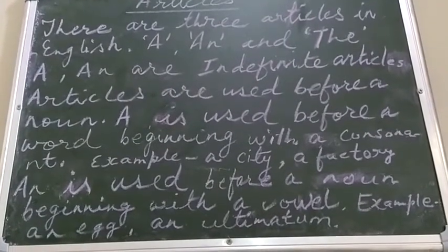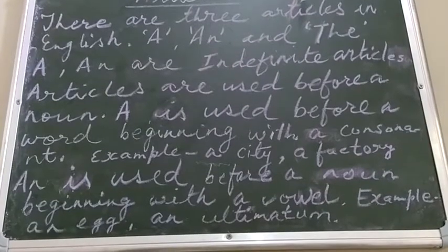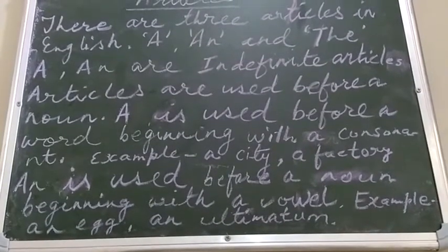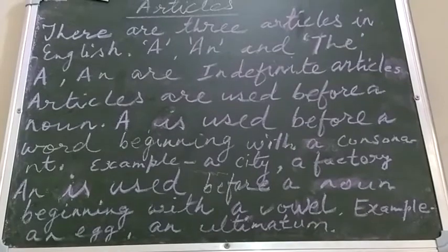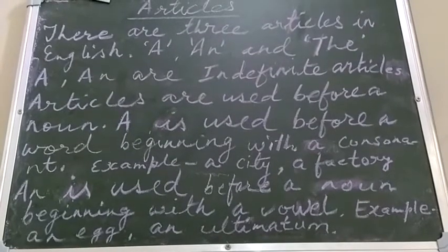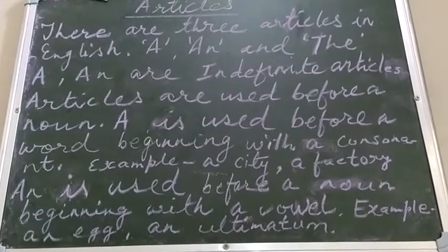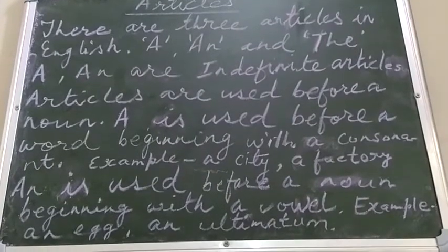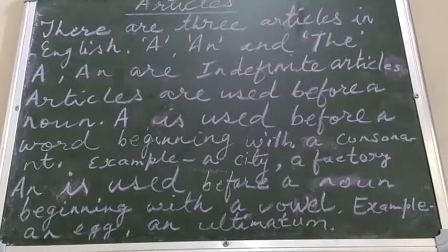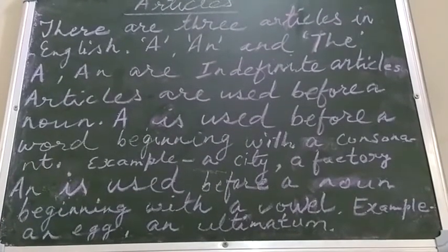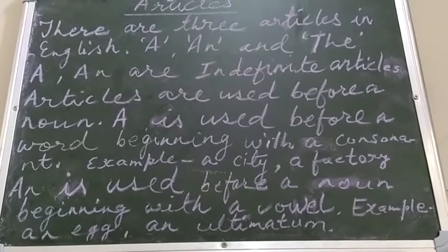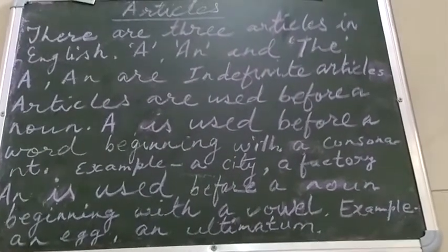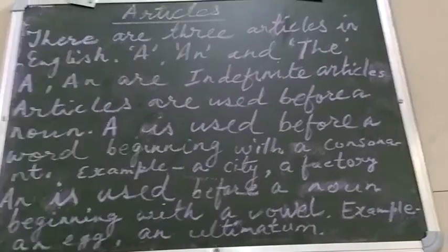Articles are used before a noun. A is used before a word beginning with a consonant. For example: a city, a factory. An is used before a noun beginning with a vowel. For example: an egg, an ultimatum.